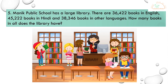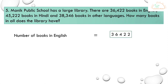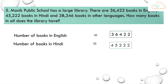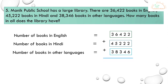The phrase 'in all' means we have to do the addition. Here is the solution. First statement: number of books in English is equal to thirty-six thousand four hundred and twenty-two. Second statement: number of books in Hindi is equal to forty-five thousand two hundred and twenty-two. Third statement: number of books in other languages is equal to thirty-eight thousand three hundred and forty-six. We have to do the addition.